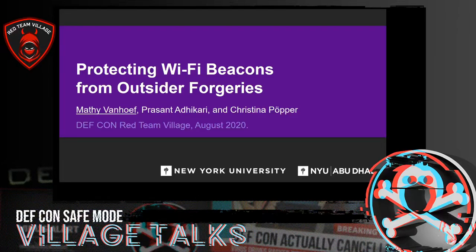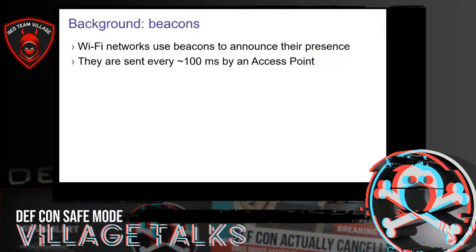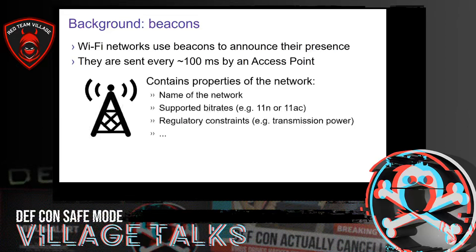As the title of the presentation implies, we're going to protect Wi-Fi beacons. What exactly is a Wi-Fi beacon? Wi-Fi networks use Wi-Fi beacons to announce their presence to nearby clients, and they are sent roughly every 100 milliseconds by an access point. These beacons contain various properties of the network — for example, the name of the network, the supported bit range, whether the network supports the 11N or 11AC standard, certain regulatory constraints such as the maximum transmission power, and so on.